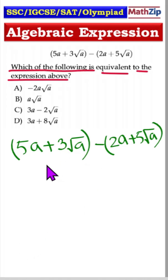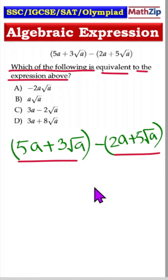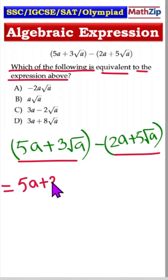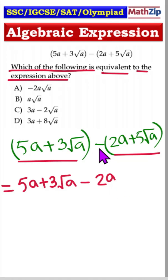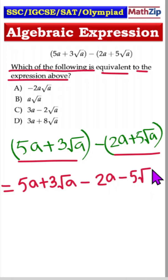Here are two expressions we will subtract from each other. First, 5a plus 3 root a, then the sign will be changed inside the bracket — so minus 2a, and minus once we multiply it will be minus 5 root a.